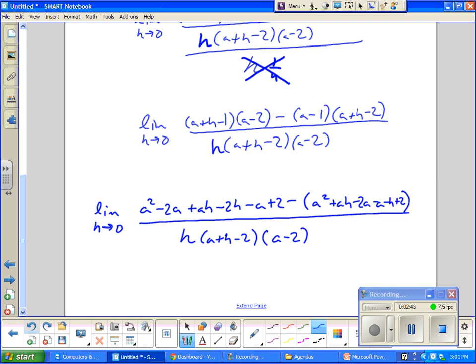But listen, do you notice how I put all this in parentheses down here to make sure I distribute my negative properly? But now I'll distribute the negative in a different color. Negative a, negative ah, positive 2a, positive a, positive h, negative 2.